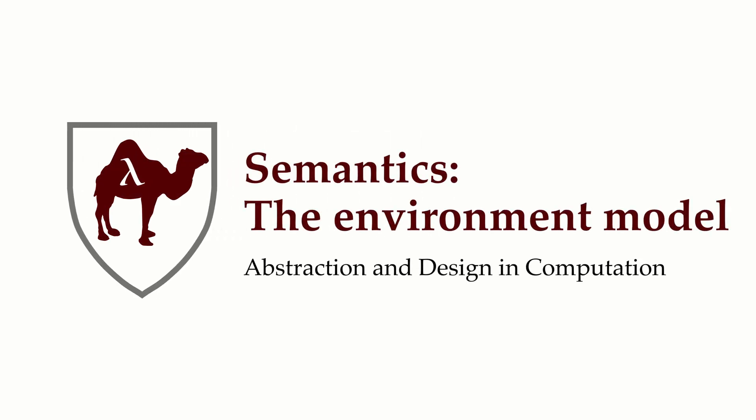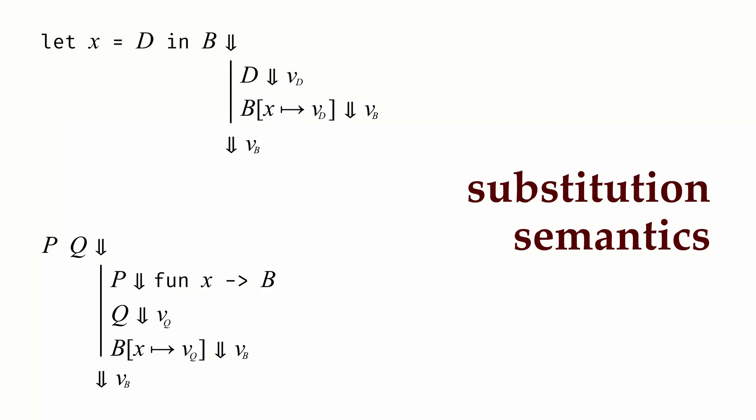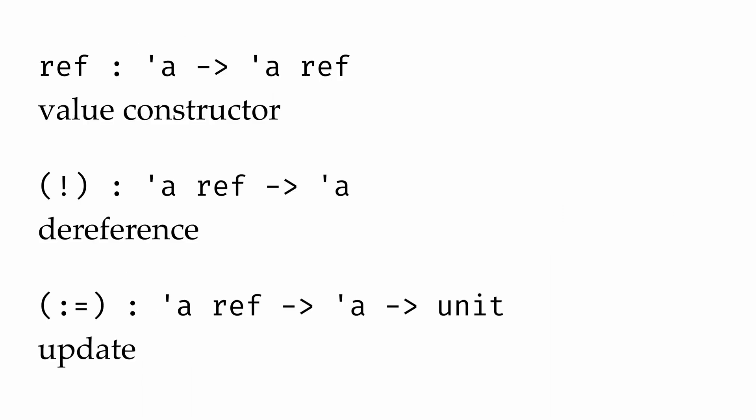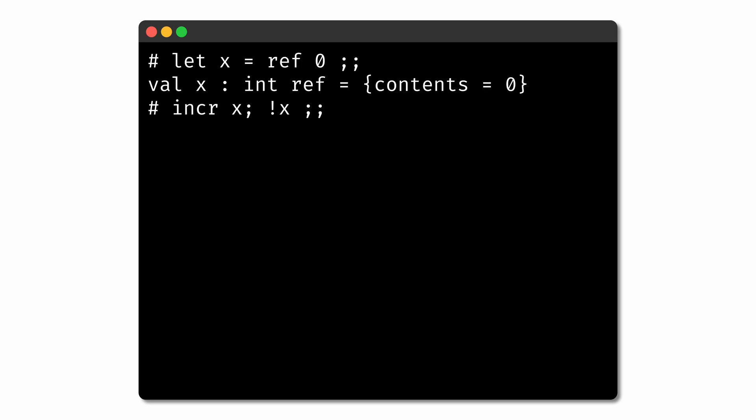Now that we've explored programming paradigms that involve mutability of data, let's turn our attention once again to the semantics of programming languages. We have already seen a form of semantics known as substitution semantics, based on the idea that two expressions mean the same thing if we can substitute one for the other in any proposition and preserve truth. But this notion of semantics runs into some problems, especially when we consider using it for a language that involves mutability. With references, we can have situations where the exact same expressions evaluate to two different values, something that our current substitution semantics can't easily handle.